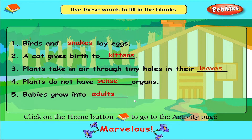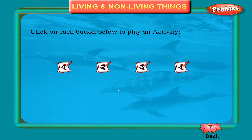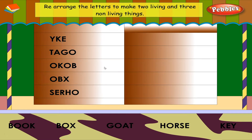Marvelous! Click on each button. Rearrange the letters to make a living and three non-living things.